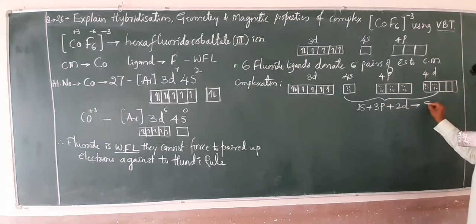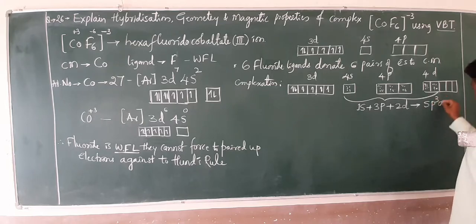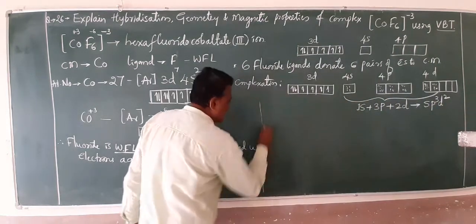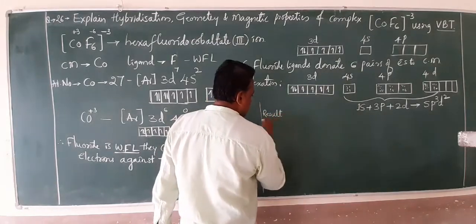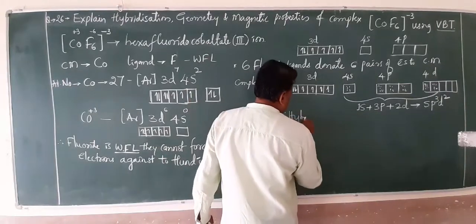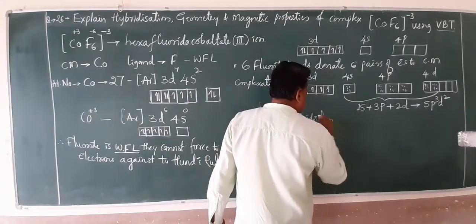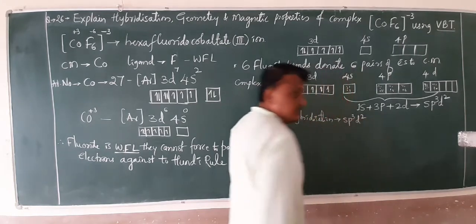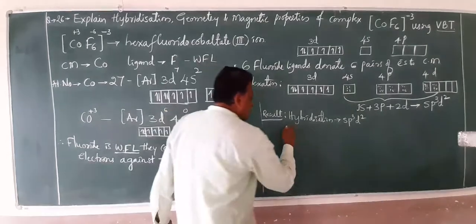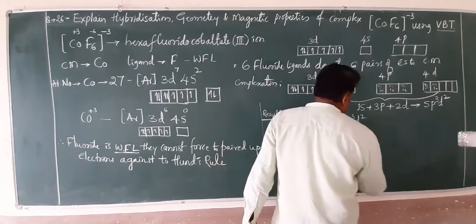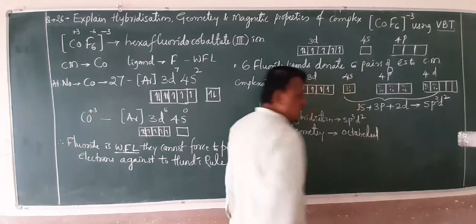This undergoes hybridization. Just keeping your mind: 1s orbital, 3p orbitals, and 2d orbitals. Now it becomes sp3d2 hybridization. What about hybridization? sp3d2. Now it comes directly to the result. Your hybridization is sp3d2. Geometry: octahedral.